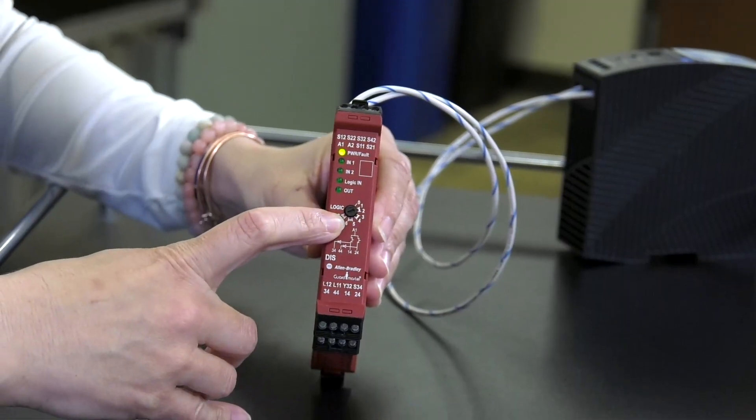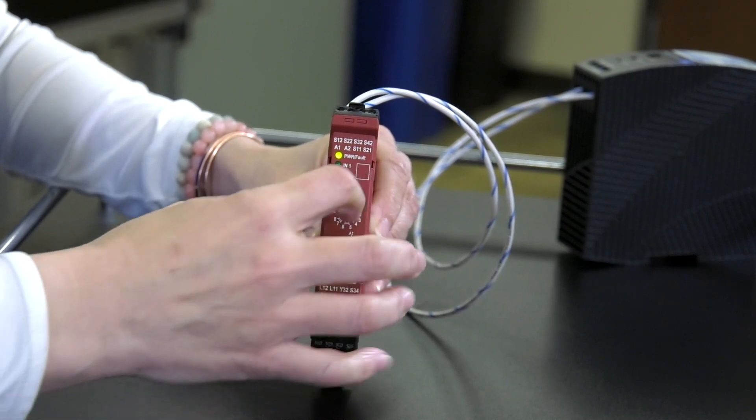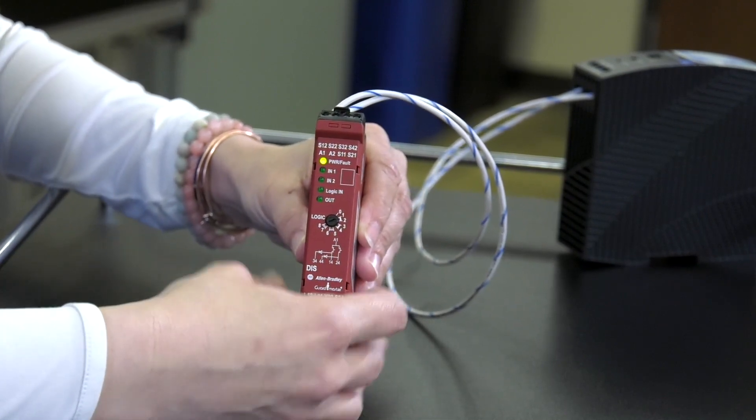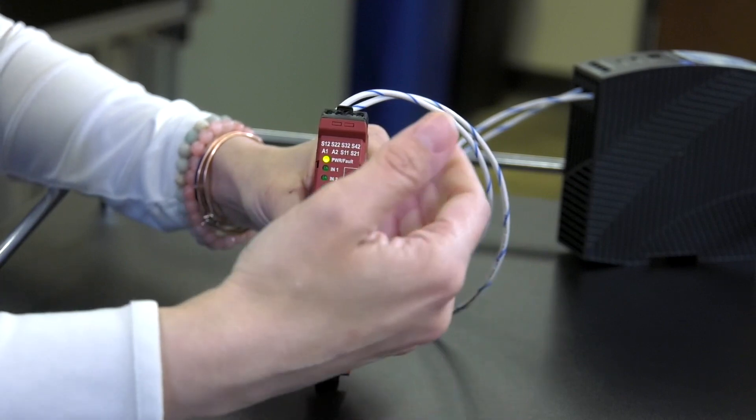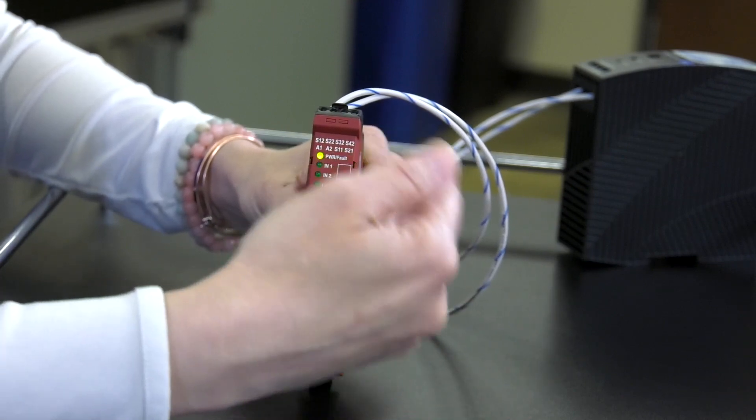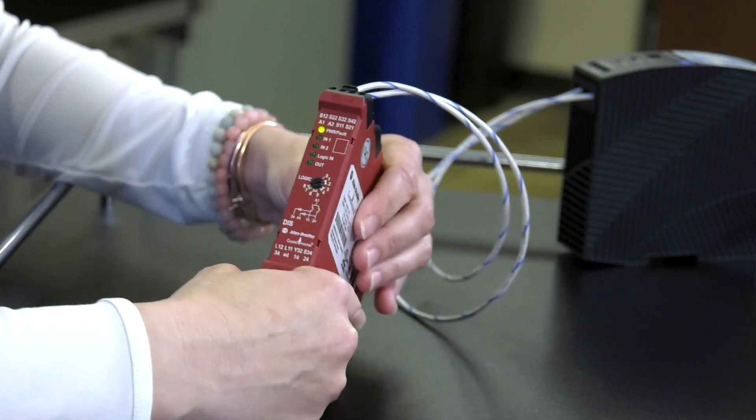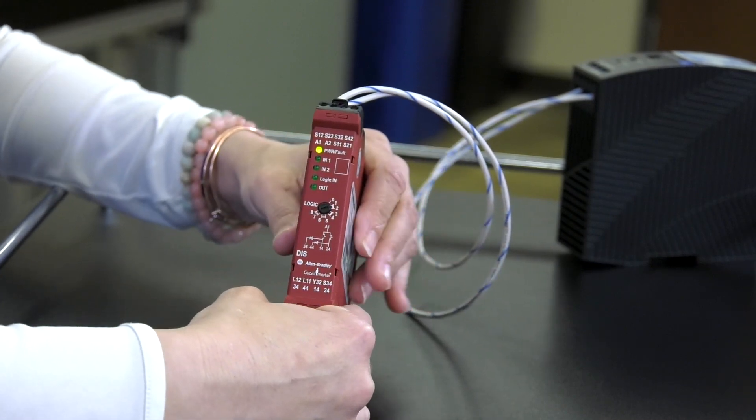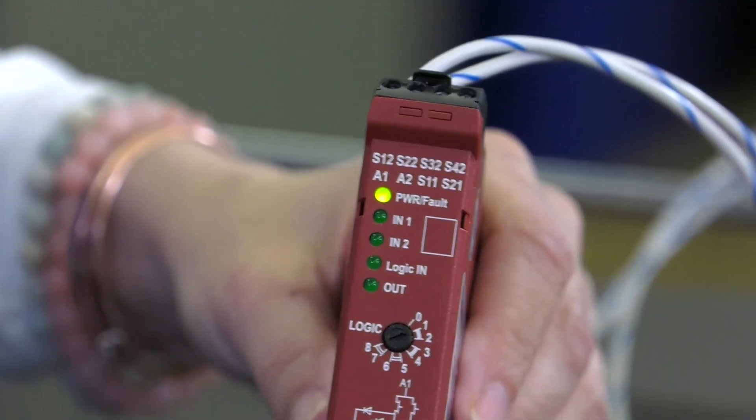There is a dial on the front which sets your configuration, and you'll notice there's one through eight, so it's going to be dependent on whether or not you have one or two devices inputting, and then whether you want them to be ANDed or ORed. That is listed in the user manual, so we'll go ahead and get started right away.